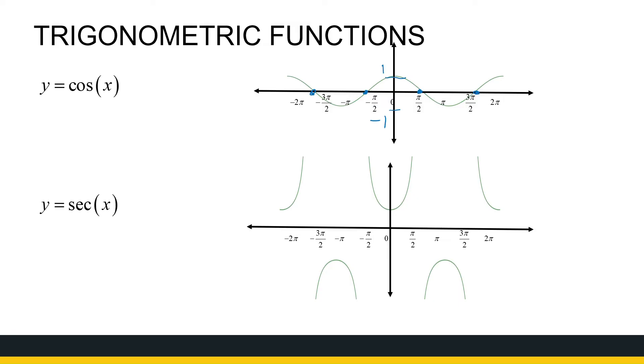Now sec of x we defined as one over cos of x. So where cos is zero, sec should have an asymptote because I can't divide by zero, so there cannot be any value there. And where cos is one and minus one at its maximum and minimum values, sec is also one, because one divided by one is just one, and one divided by minus one is also just one.